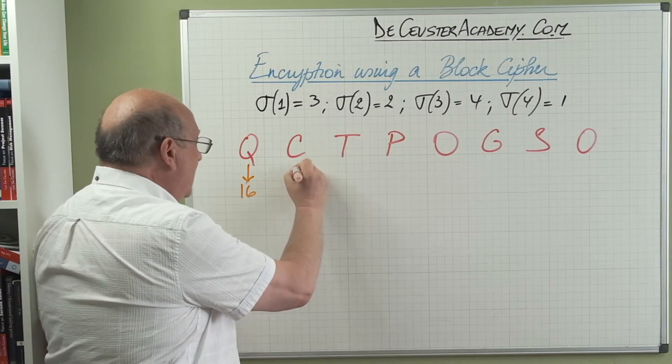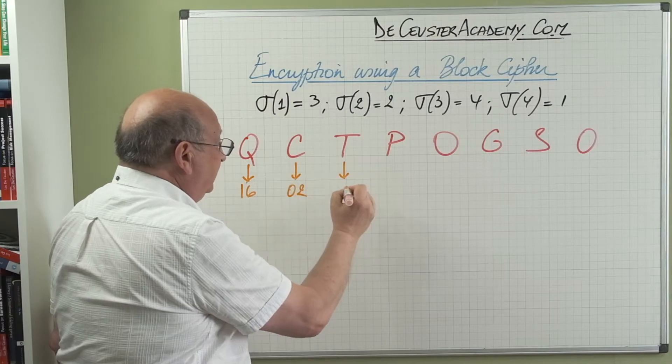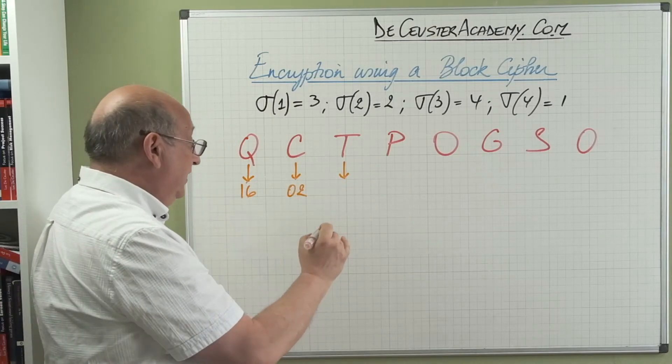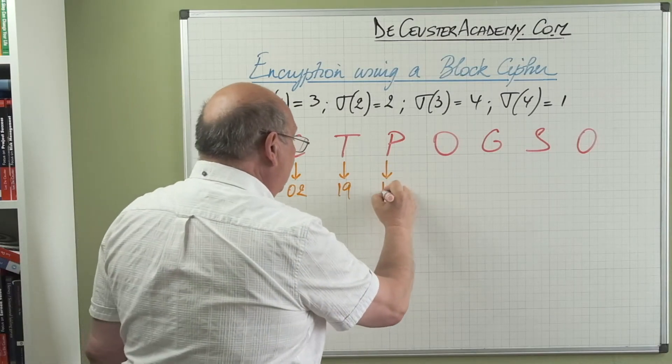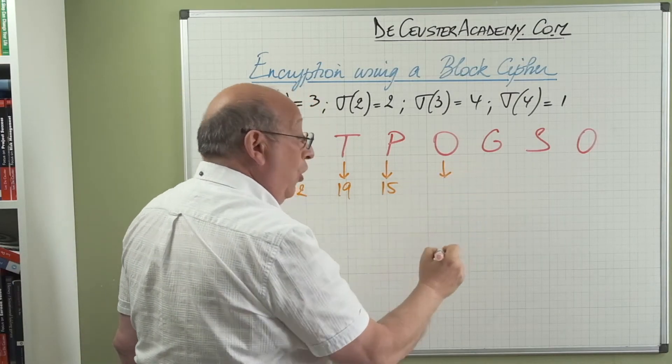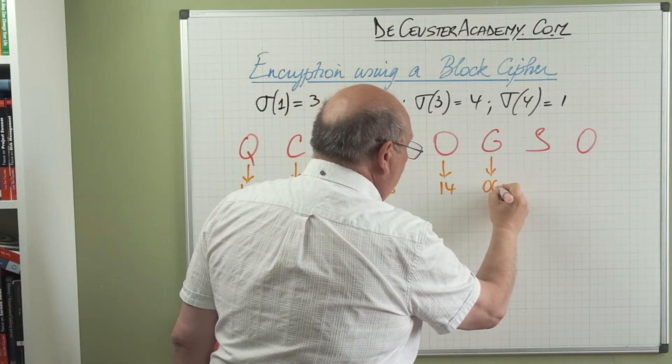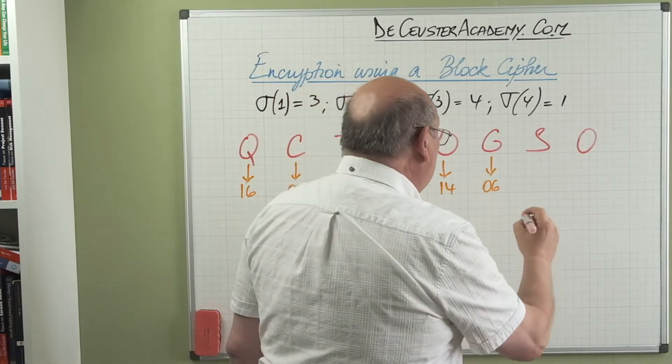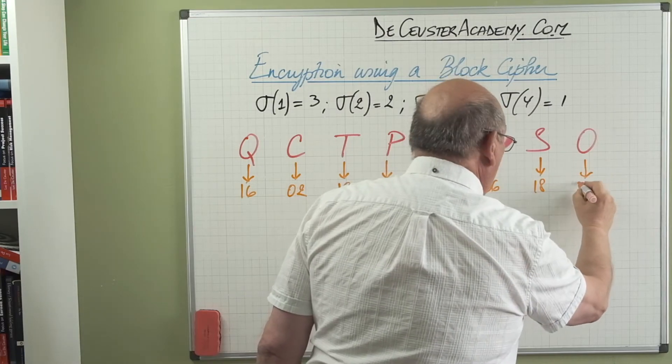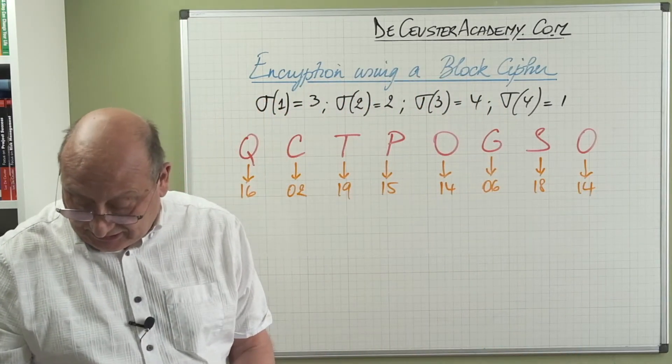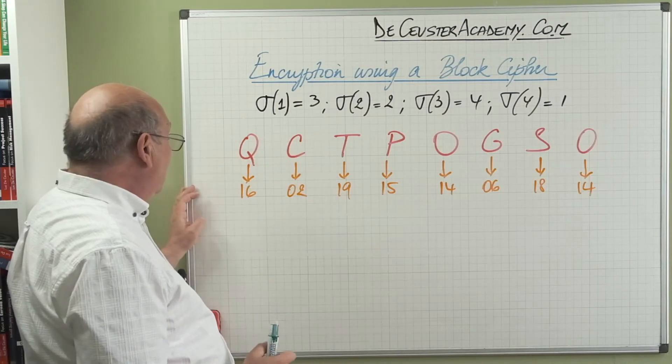We have O which is 14, G is zero six, and then we have S which is 18, and O is again 14. So these are the letters that correspond.